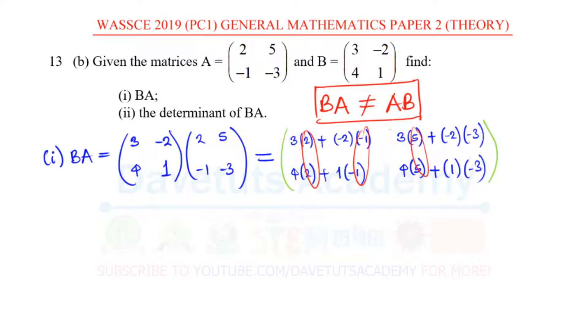So, if you have to evaluate this, this is going to give us 3 times 2, that is 6, minus 2 times minus 1, that is plus 2. In this case, 3 times 5, that is 15, minus 2 times minus 3, that is plus 6, because negative signs multiply each other and become positive, then 2 times 3 is 6.